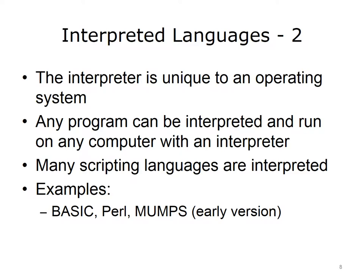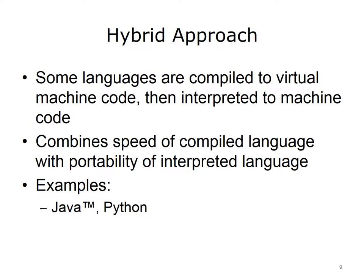Some examples of interpreted languages are BASIC, Perl, and MUMPS — the Massachusetts General Hospital Utility Multiprogramming System. There is a hybrid approach that combines compilation and interpretation. In this case, programs are compiled to an intermediate type of code that can run on a virtual machine. This virtual machine then interprets the code. As long as a computer has the virtual machine, it can run any code that is compiled to this intermediate state.